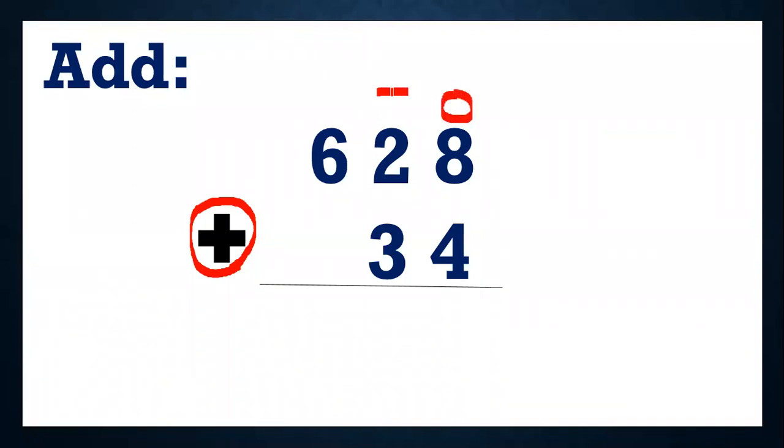So write ones, tens and hundreds. Okay, now so how do we add children? First we will always add ones, then we add tens, then we add hundreds. Right children?